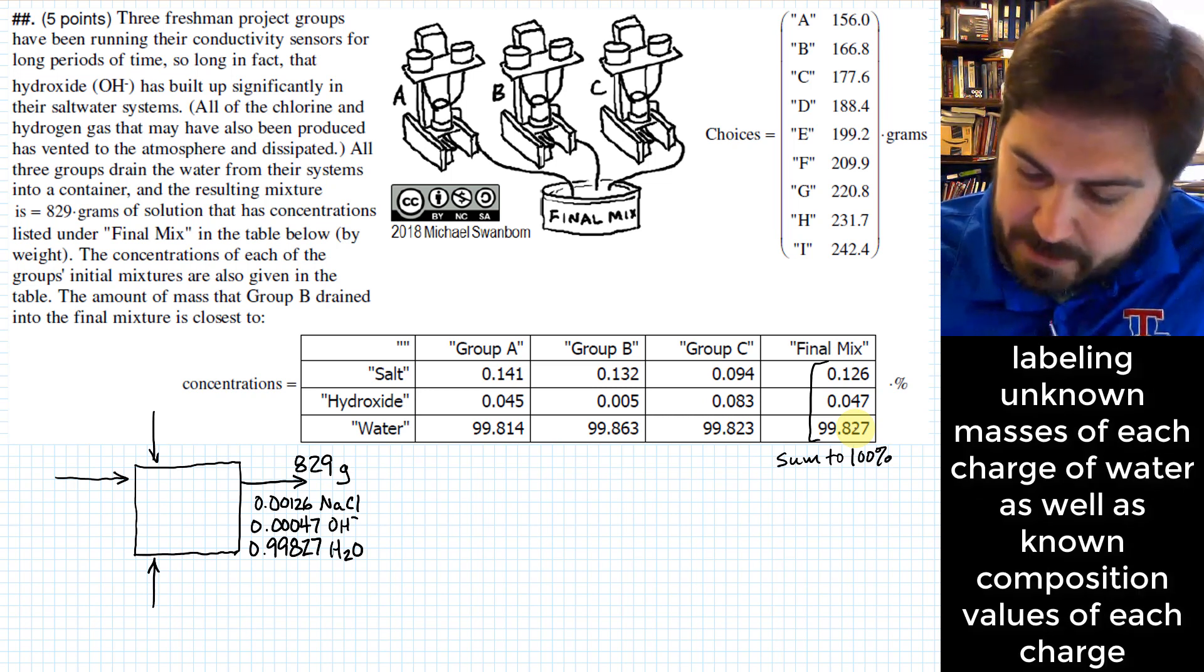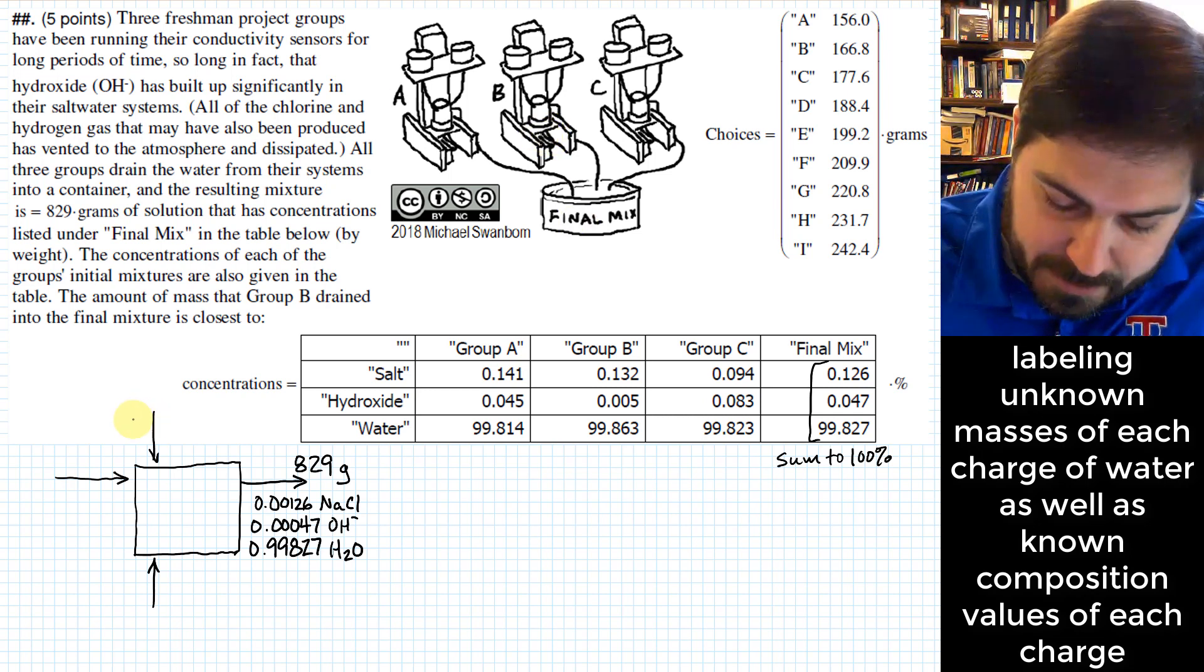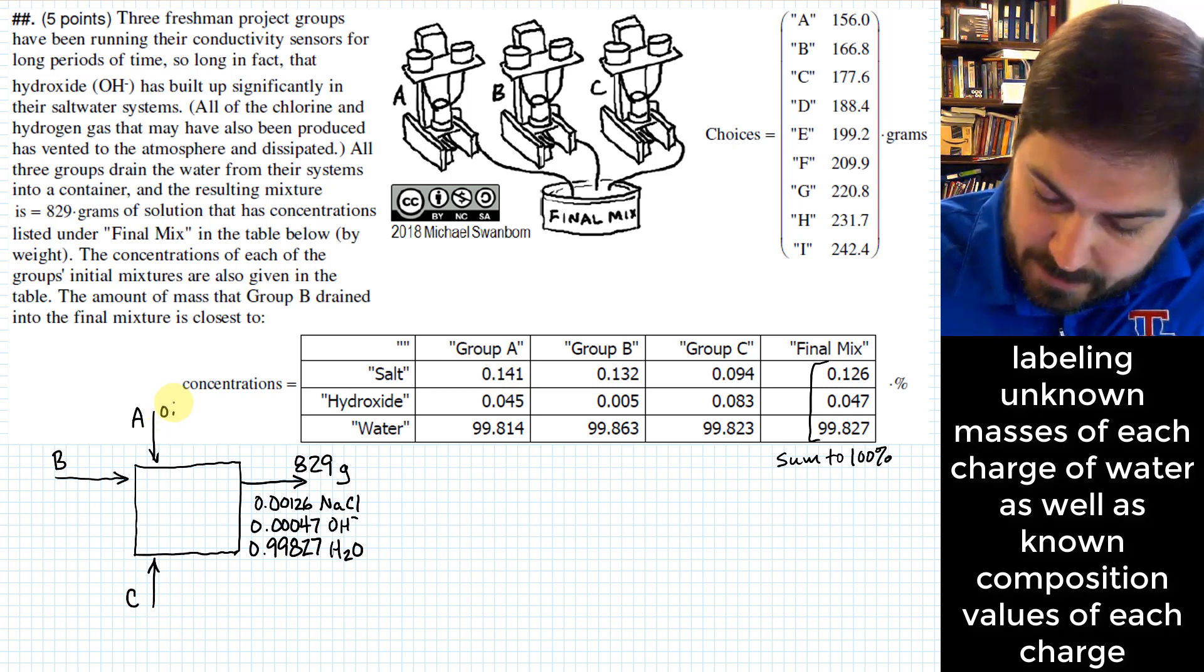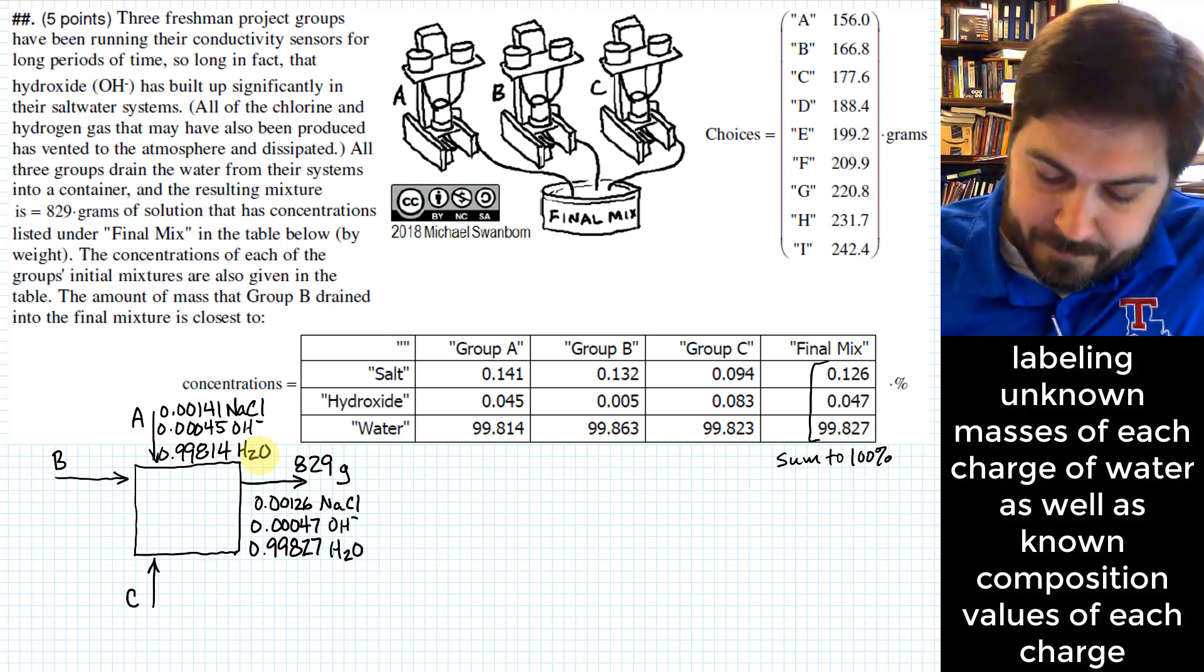Now let's actually identify each of the groups and what the content was that they drained into the final mix. I'll call this one A up here, I'll call this one B down here, and I'll call this one C down here. A is going to have 0.00141 NaCl, here I'm going to have 0.00045, that's hydroxide, and I'll do 0.99814 water.